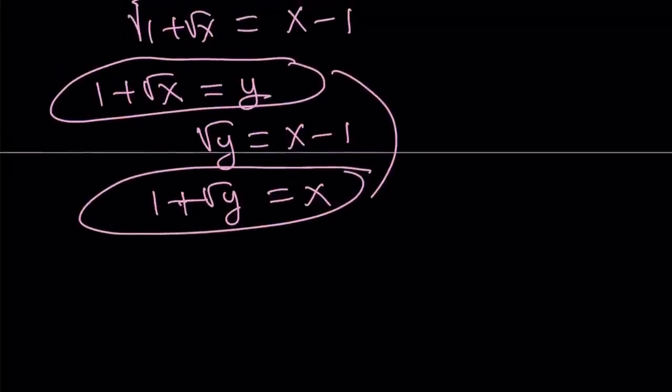Now, how do you solve this system? By subtracting these two equations. What's the motivation behind subtraction? The motivation is it'll make it factorable — that's one reason. The second reason is we can get rid of the 1.